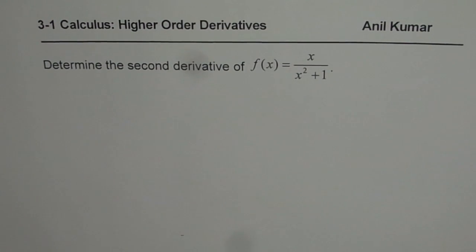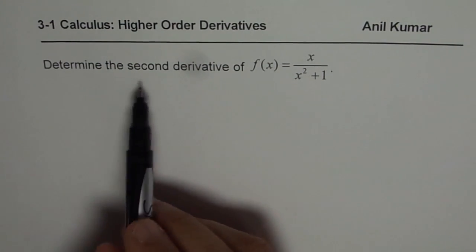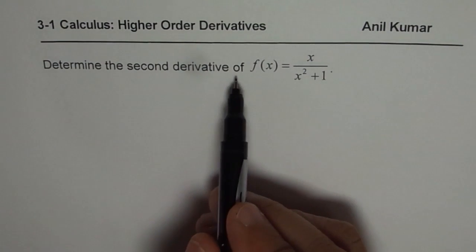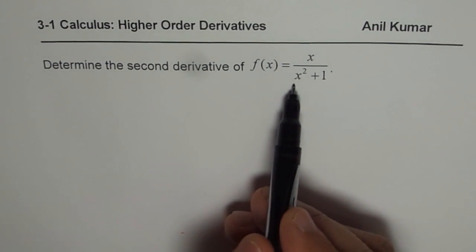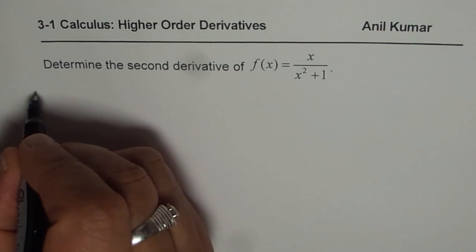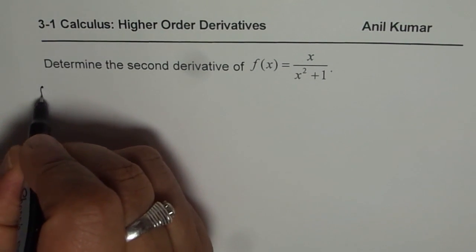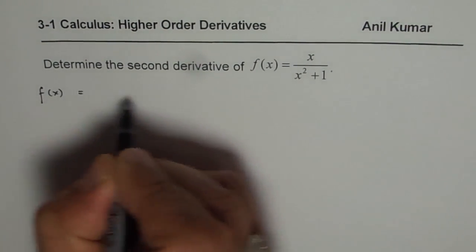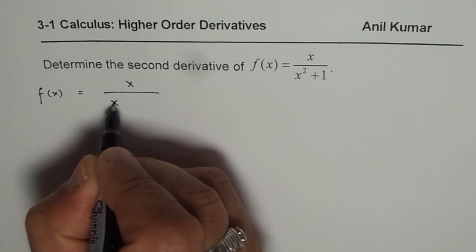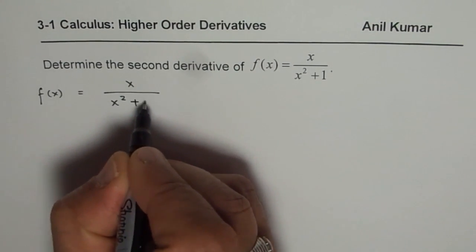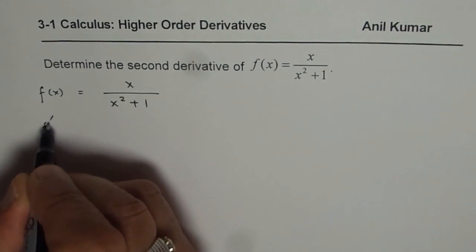I am Anil Kumar and now let us see how to find the second derivative for rational functions. Determine the second derivative of f(x) equals x over x squared plus 1. So f(x) is given to us as x over x squared plus 1, and we need to find the derivative f'(x).